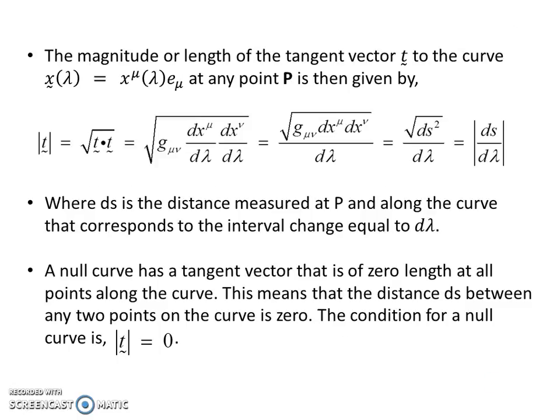The magnitude or length of the tangent vector t to the curve at any point P is then given by |t| = √(t·t), the square root of this expression here. This looks like the metric: √(g_μν dx^μ dx^ν)/dλ = ds/dλ, where ds is the distance measured at P and along the curve that corresponds to the interval change equal to dλ. So starting at P, we're going to measure the distance along the curve according to whatever length dλ is.